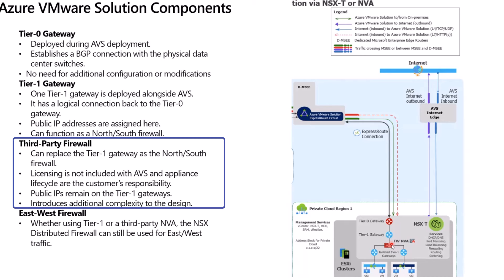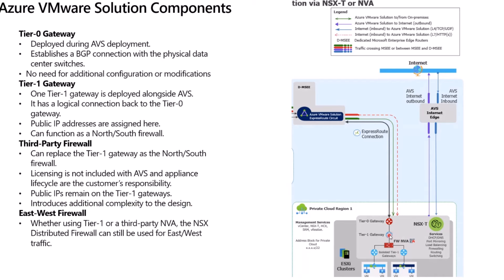Licensing is not included with AVS, and appliance lifecycle is your responsibility. When you deploy a third-party NVA, you are responsible for the lifecycle of the appliance and licensing. Even though you deploy a third-party NVA, the public IP addresses are still going to remain at the Tier 1 gateway. This introduces a little complexity to the design because you will need to create static routes for your public IPs with the next hop being your firewall virtual IP address. So the IPs remain on the Tier 1 gateway, and you need that static route to the third-party NVA.